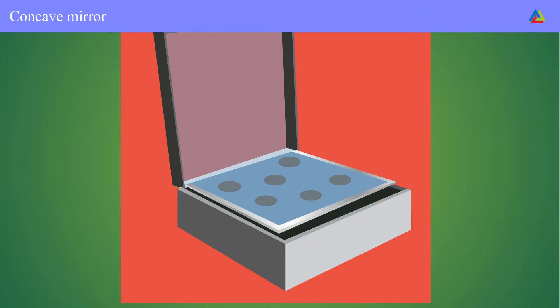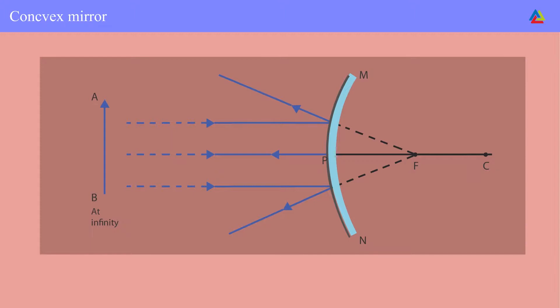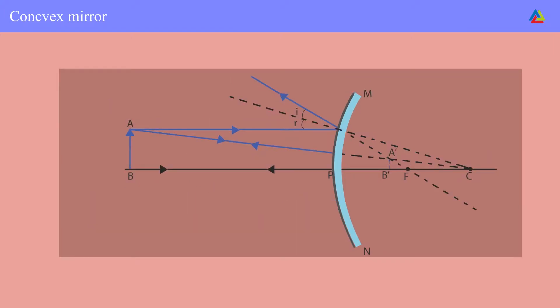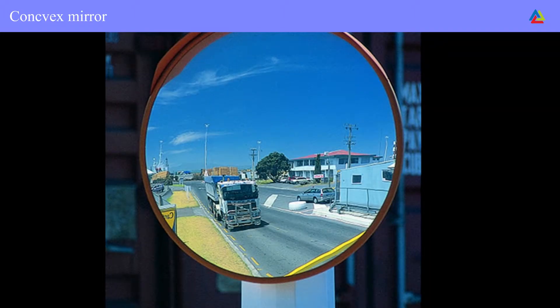For a convex mirror, when an object is placed at an infinite distance, a highly diminished, point-sized, virtual, and erect image is formed at focus F behind the mirror. When the object is placed between infinity and the pole P of the mirror, a diminished, virtual, and erect image is formed between P and F behind the mirror. We can see a full-length image of a tall building or a tree in a small convex mirror.